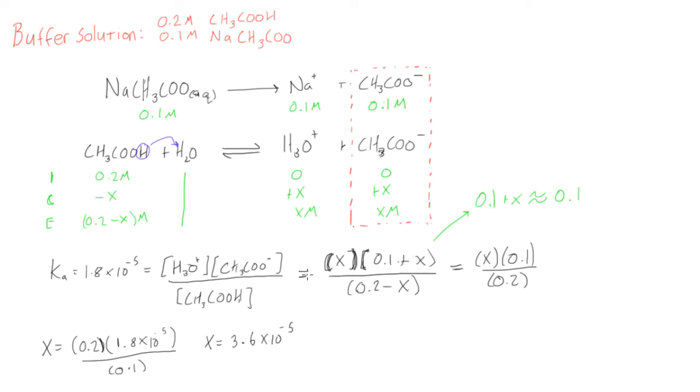All right, so that's what our X value is. And what our X value here—if we substitute back our X, 3.6 times 10 to the -5, back into here, we'll see that that's actually our equilibrium concentration of H3O+.